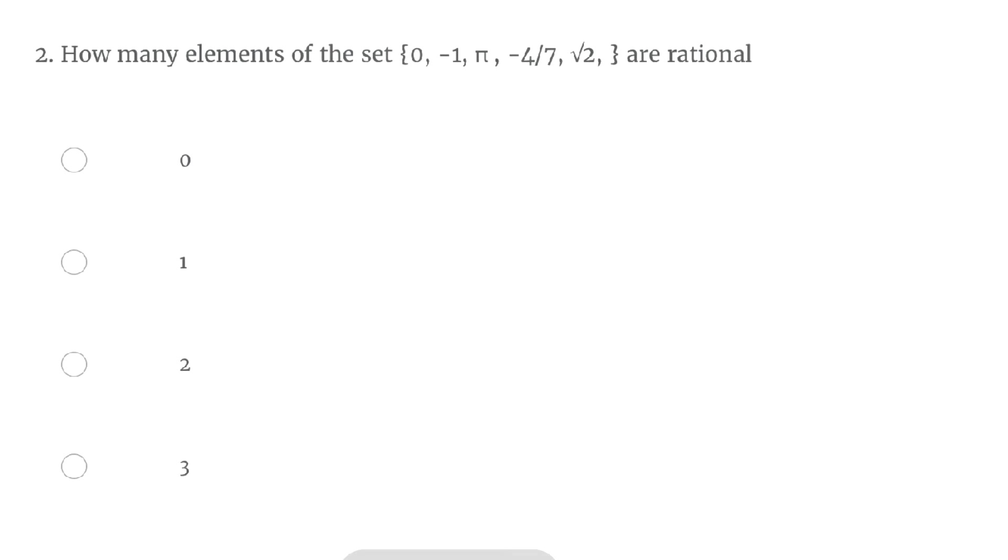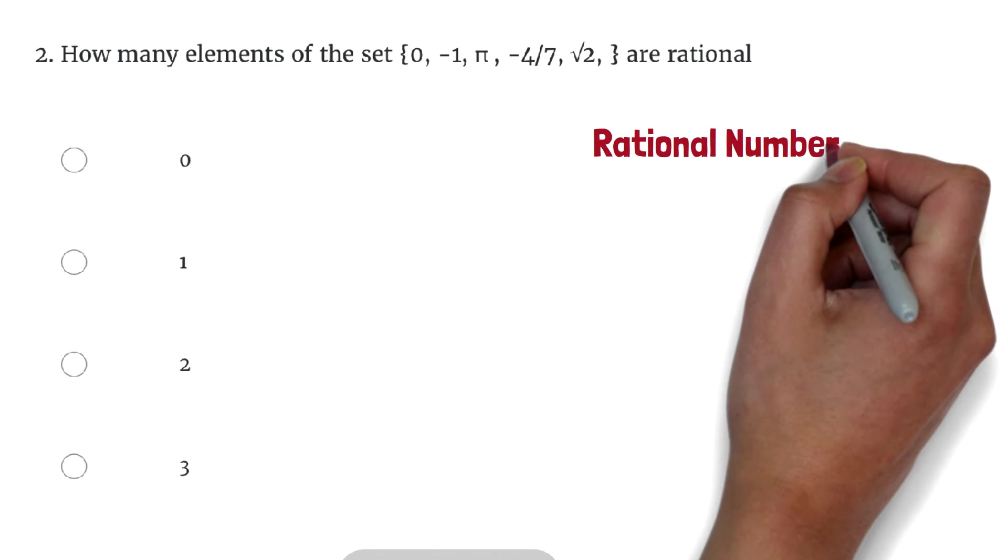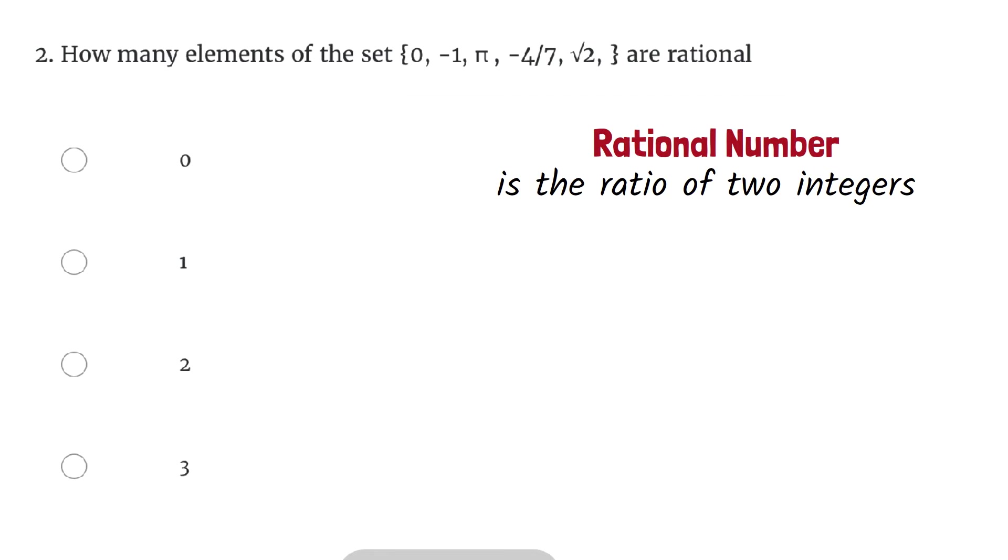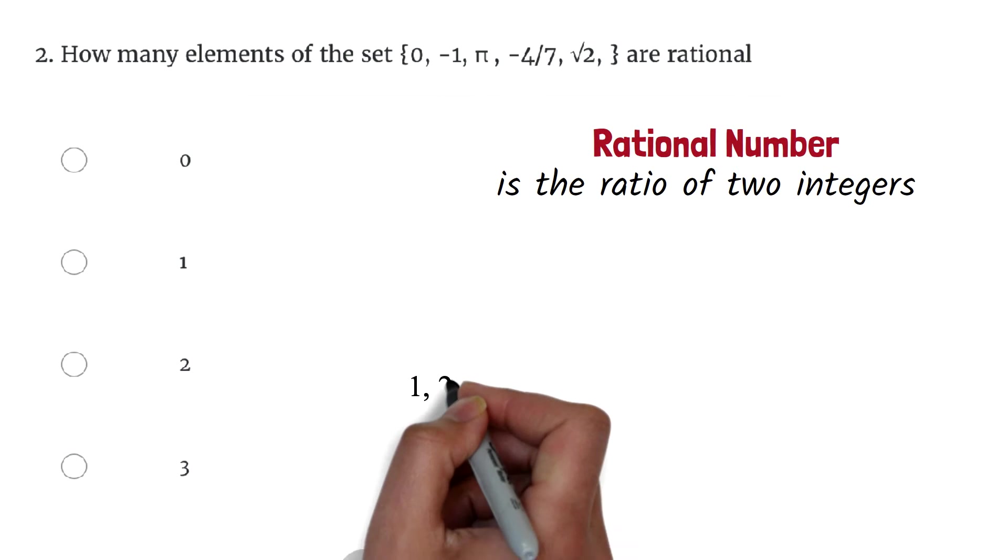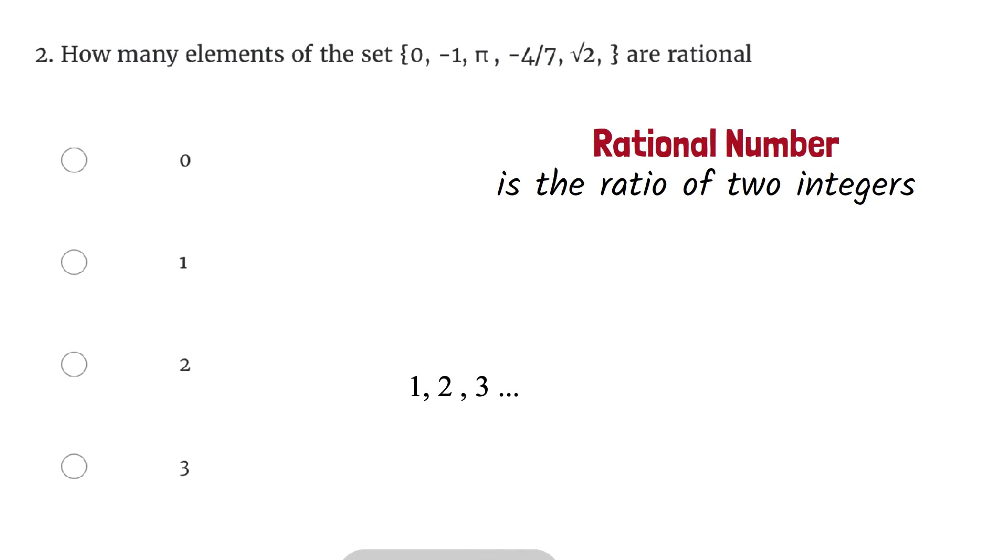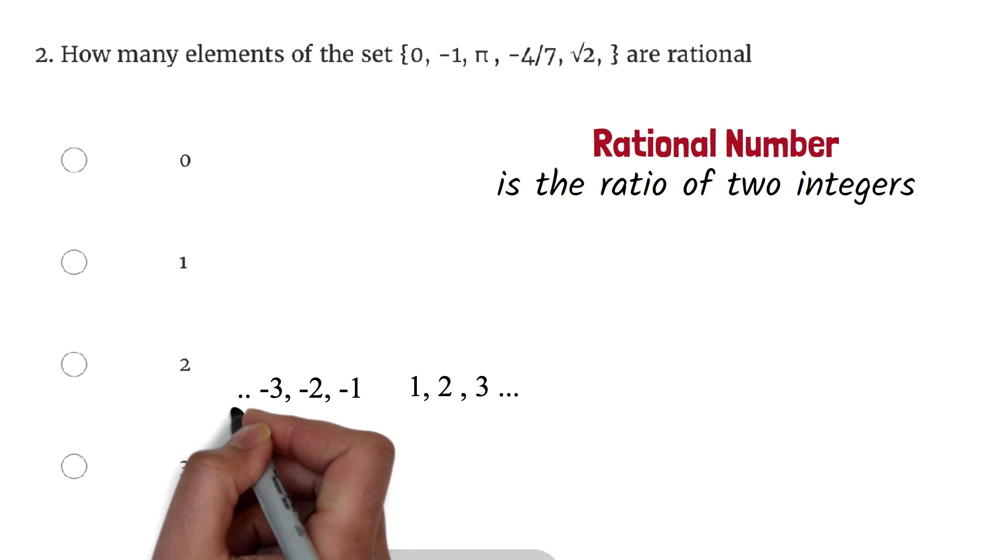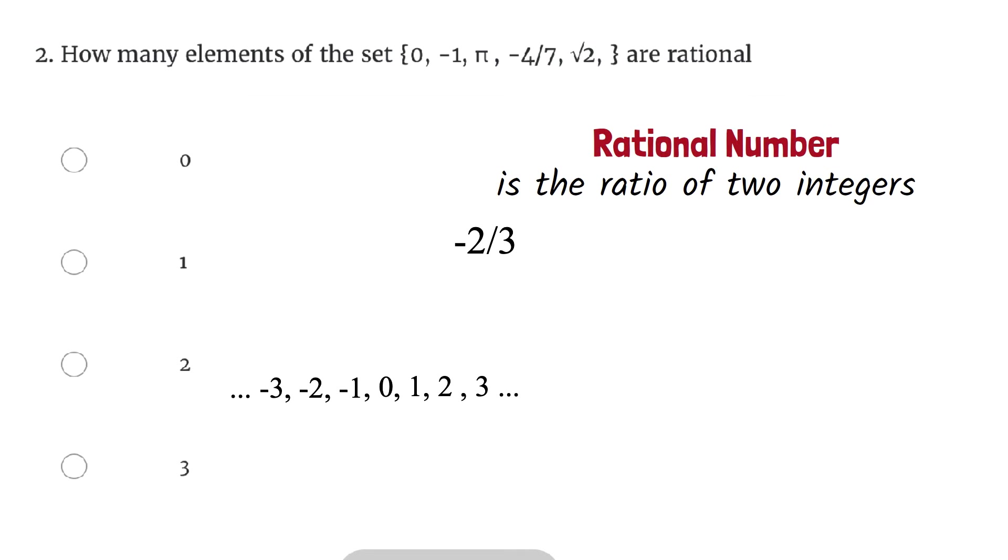Let's look at question 2. How many elements of the set 0, negative 1, pi, negative 4 over 7, square root of 2 are rational numbers? A rational number is the ratio of 2 integers. We know our integers are positive counting numbers 1, 2, 3, and so on, and negative counting numbers negative 1, negative 2, negative 3, and so on, and 0. So if we take any of the numbers over another number, we have a rational number. So negative 2 over 3 is rational. 5 over 7 is also rational. 4 over 1 is also rational. Note that any number over 1 is the same number. So 4 over 1 can simply be written as 4.